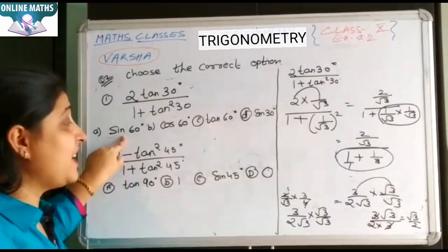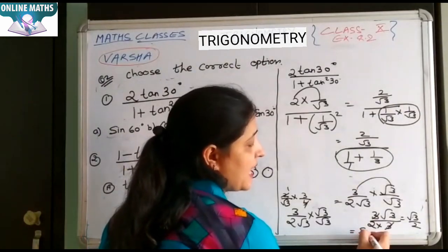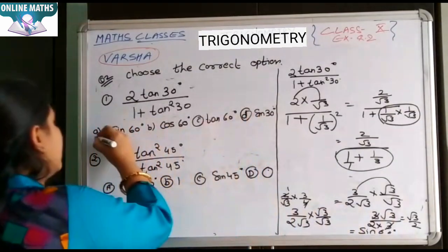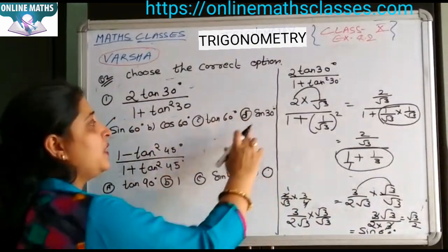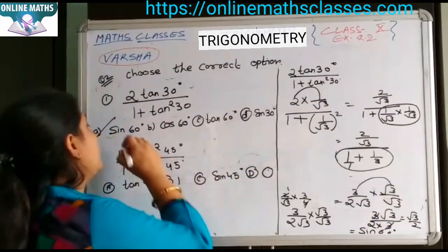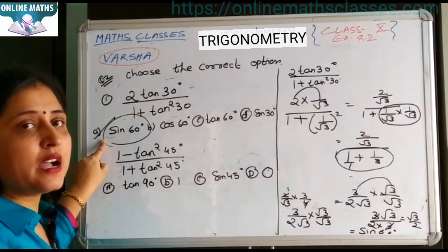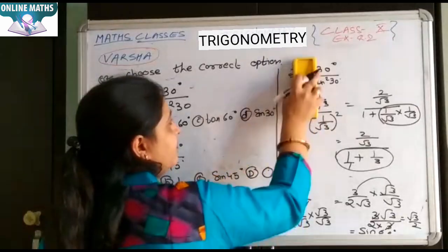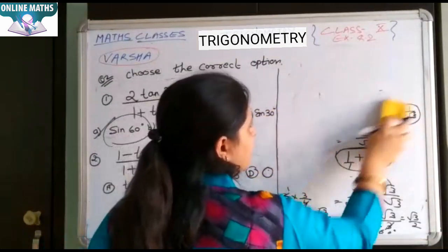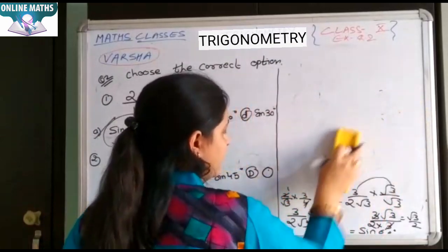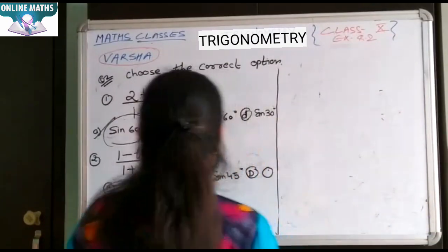Choose the correct option. Sine 60 ki value root 3 by 2. Yes. Sine 60 ki value kya hoti hai? Root 3 by 2. It means aapka answer kya hai? Sine 60. Cos 60 ki value, tan 60 ki value root 3 by 2. No. Sine 60 ki value kya hoti hai? Root 3 by 2. It means aapka correct answer hai.